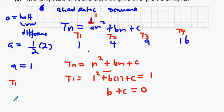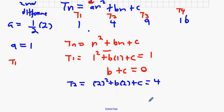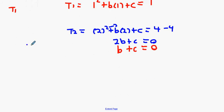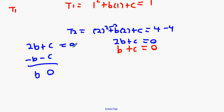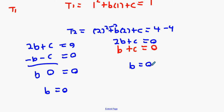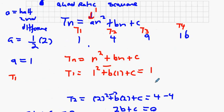Next I'll do t2: two squared plus b times two plus c equals four, giving two b plus c equals zero. We have a simultaneous equation. Subtracting: two b plus c minus b minus c equals zero, so b equals zero, and therefore c equals zero. So b and c are both zero, meaning Tn equals n squared — they're all perfect squares.